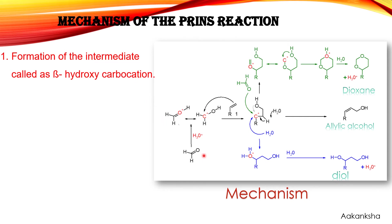In the Prince reaction, the substrates are the aldehyde and the alkene. Here, formaldehyde is the substrate. In the first step, the aldehyde gets protonated, resulting in the formation of the oxonium ion. The oxonium ion is a species in which oxygen carries a positive charge attached with three bonds. The carbon carrying the positive charge acts as an electrophile over the alkene, and we get the beta-hydroxy carbocation.